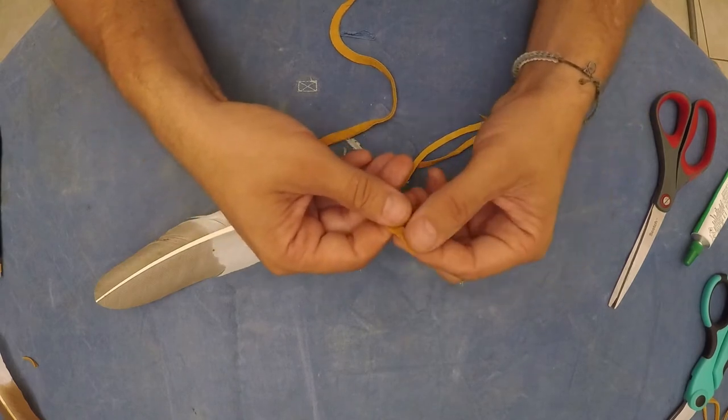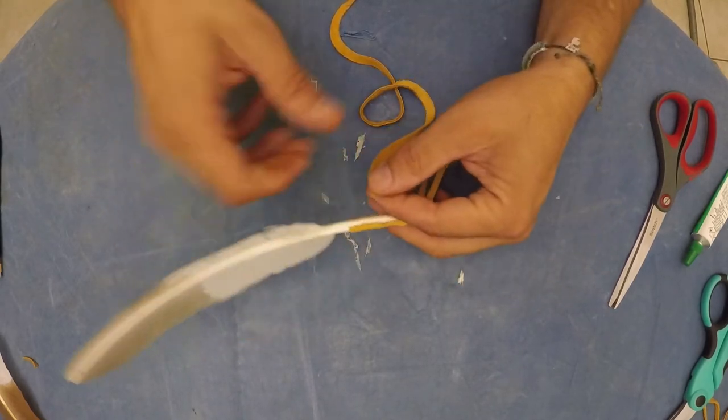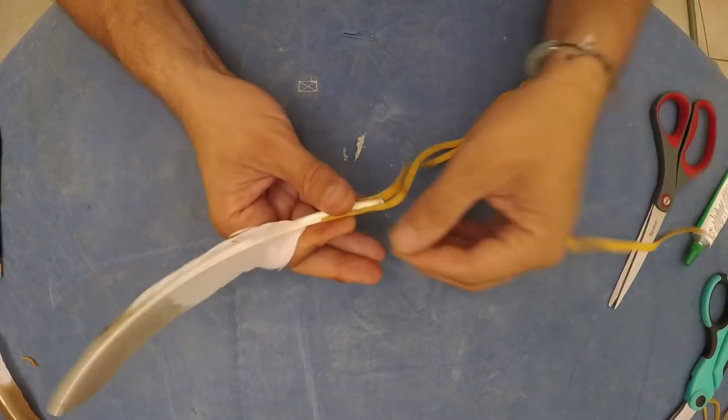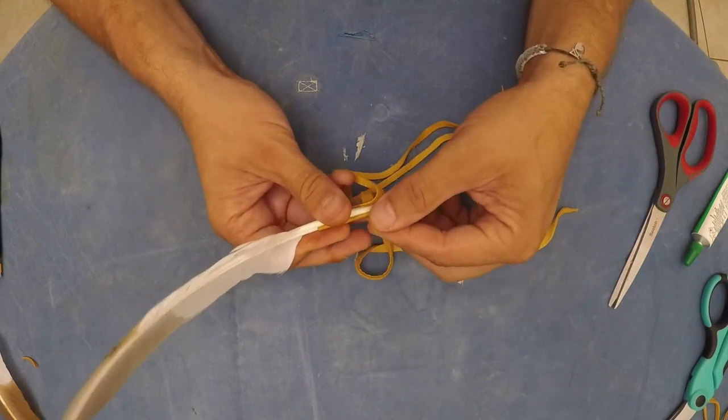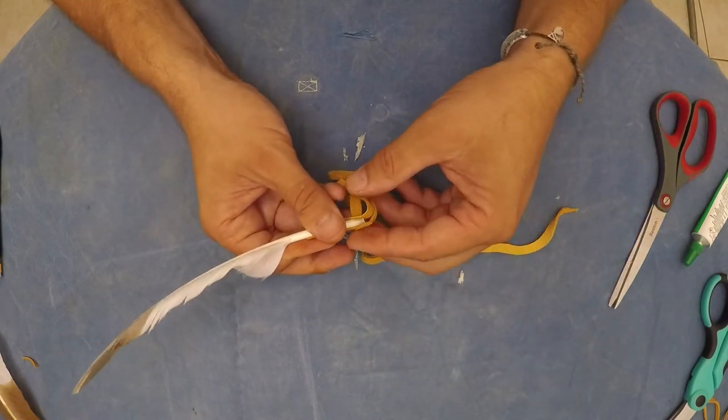When the glue is dried, take the wider piece of leather and hold it against the bottom of the quill so that you can glue it in place. This will serve to anchor that end of the leather as you wrap it firmly around the quill.